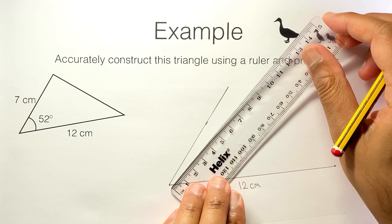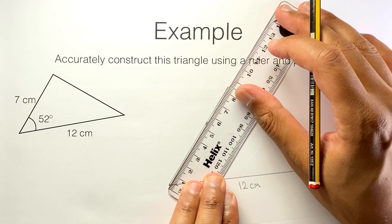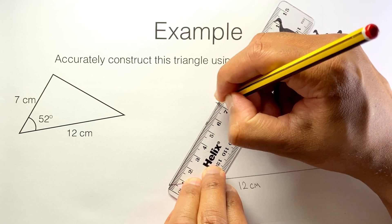So I'm going to position my ruler so the zero is here and just measure out to seven centimetres which is there.